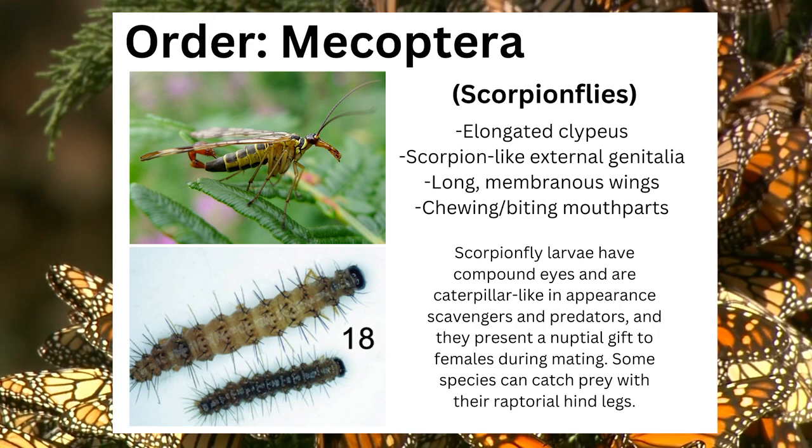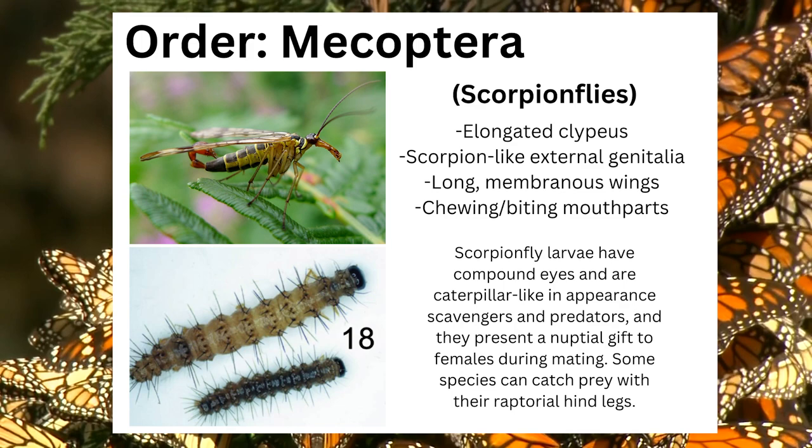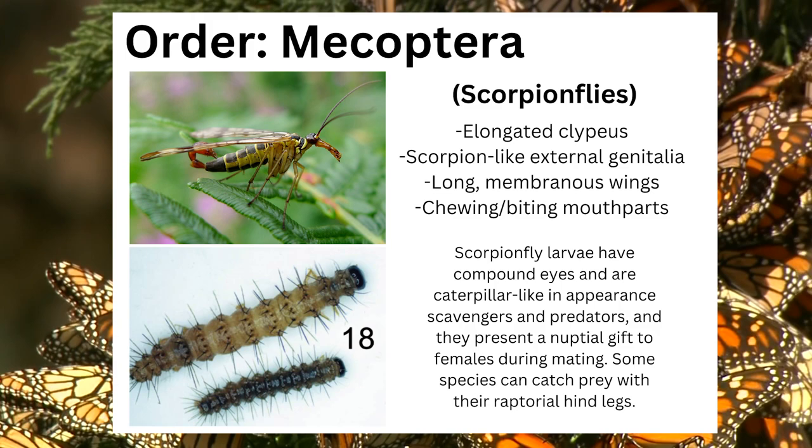Insects in the order Mecoptera, commonly known as scorpionflies, are notable for having an elongated clypeus, scorpion-like external genitalia, long membranous wings, and chewing-biting mouthparts. Scorpionfly larvae have compound eyes and are caterpillar-like in appearance. They are scavengers and predators, and they present a nuptial gift to females during mating. Some species can catch prey with their raptorial hindlegs.